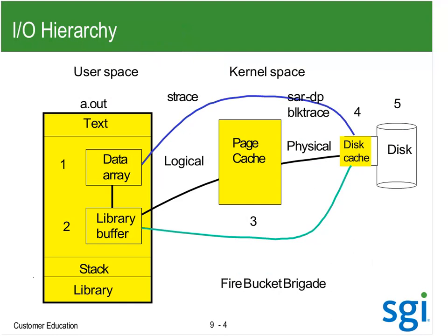We were looking at a more detailed picture here. We start off with our data - if it's Fortran, it's going to go through a library buffer. Sometimes the data is in the stack if we've got automatic arrays. Then we've got an I/O operation that occurs from the application. If I do a write in Fortran or C, that's going to result in a write system call - that's known as a logical request. Every time I make a read or write system call to the kernel, that's a logical I/O. We were tracking those with strace.